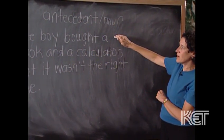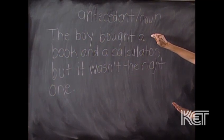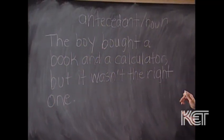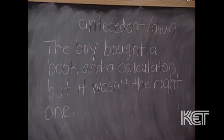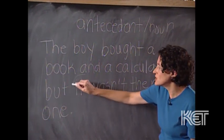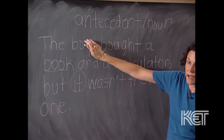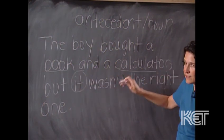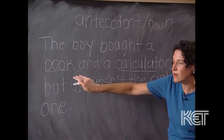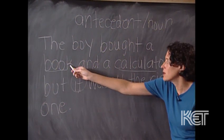Here's a sentence — I think you'll be able to pick out the problem. It's called technically an unclear pronoun antecedent. The sentence is: 'The boy bought a book and a calculator, but it wasn't the right one.' Your nouns here are 'book' and 'calculator.' The pronoun 'it' could replace either one, and the problem is you don't know which one is being referred to — you don't know if he bought the wrong book or the wrong calculator.